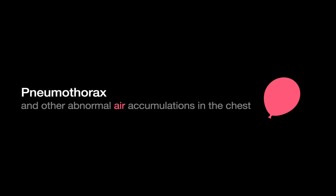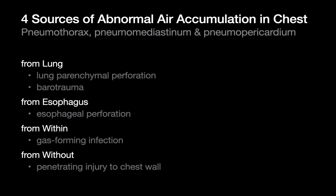Let's start with pneumothoraces and other abnormal air accumulations in the chest. We're discussing abnormal air accumulation in the pleural space, mediastinum, or pericardial space — pneumothoraces, pneumomediastinum, and pneumopericardium. When these events occur, the air has to be introduced from somewhere. The most likely sources are the lung in the setting of perforation or disruption of lung parenchyma or barotrauma, the esophageal lumen in esophageal perforation, gas-forming infection within the chest, or the environment via interruption of the chest wall.